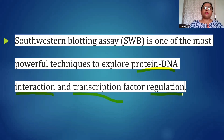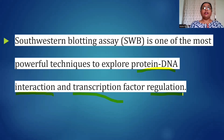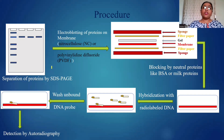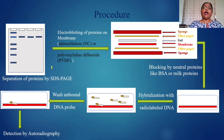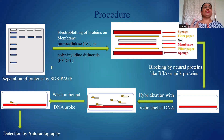In the Southern blot we run the gels of the DNA, and in the Western blot we run the gels of the proteins. In Southern Western blotting, we can separate first the proteins or the DNA, and any one of them is going to be used for the Southern Western blotting.